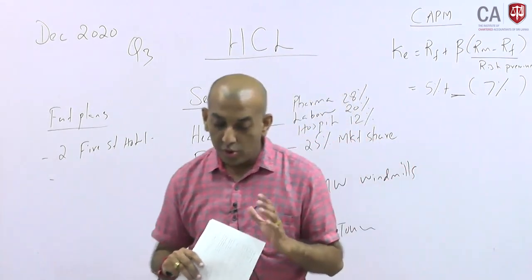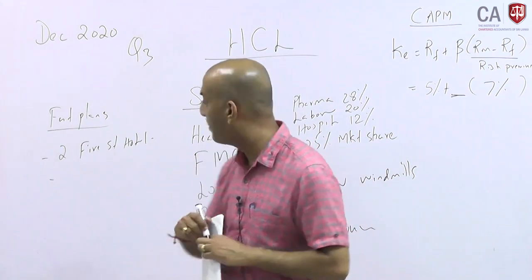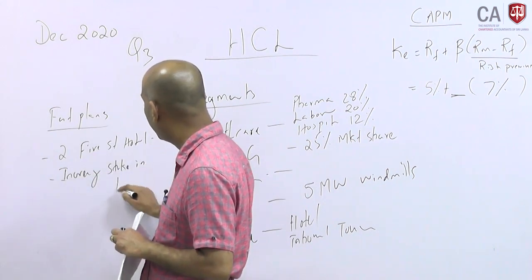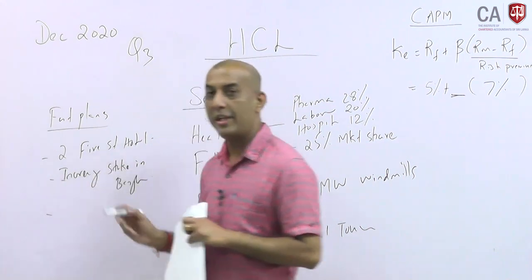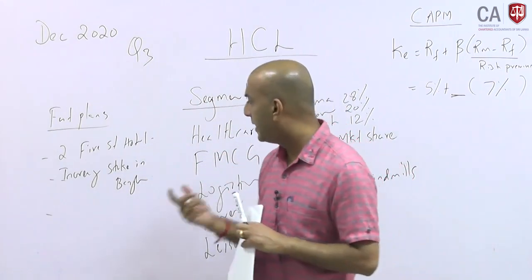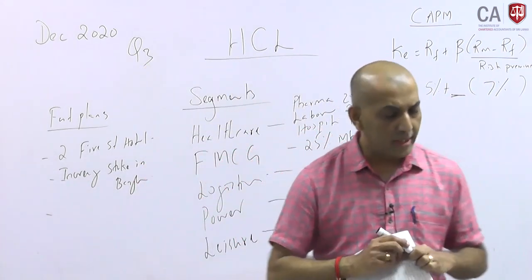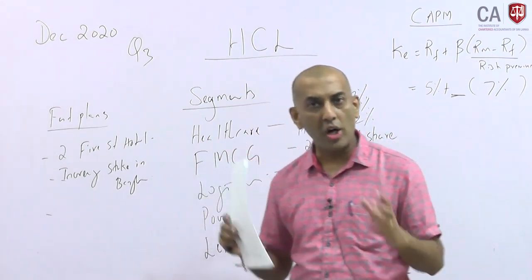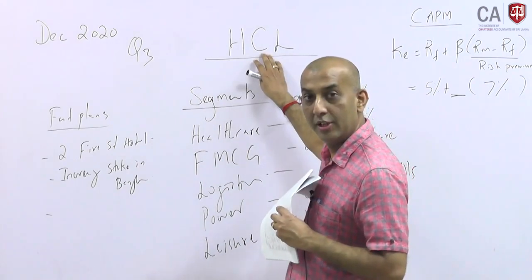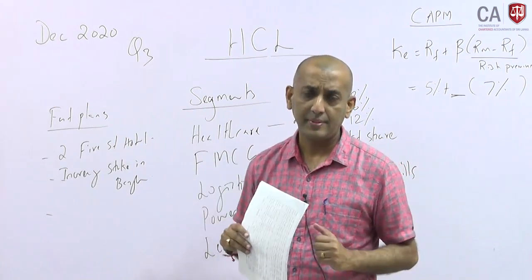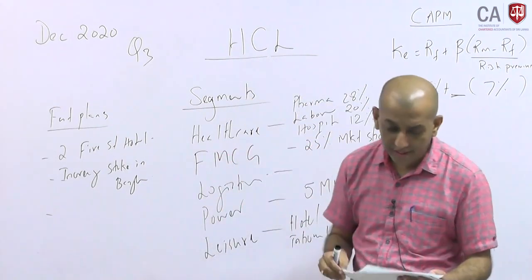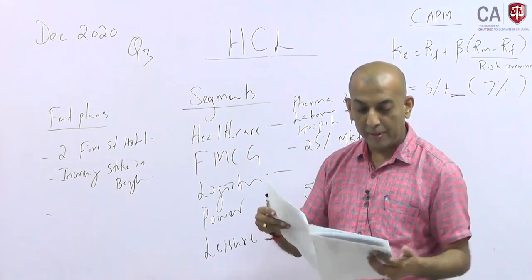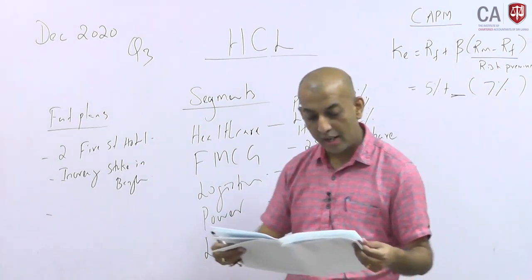They would like to go into the region. Already started in Bangladesh with a 35% investment, and there is a possibility of increasing their stake there. Additionally, there are board-level discussions because HCL has 5 segments but they are not separate companies — they all operate under one umbrella called HCL as strategic business units.